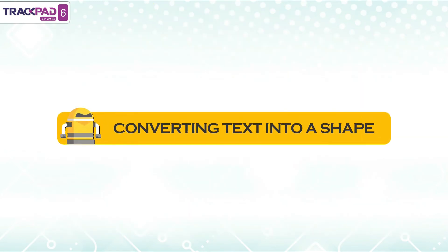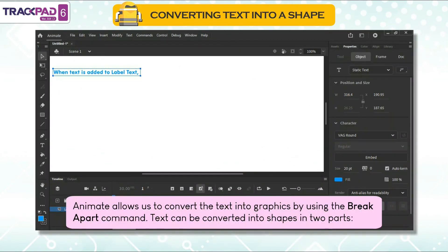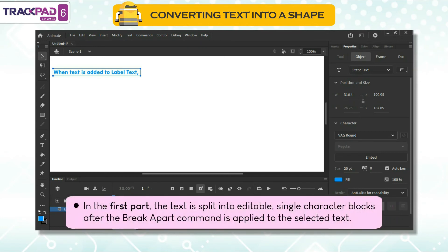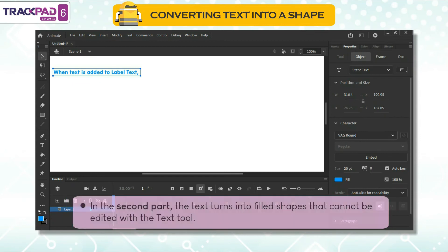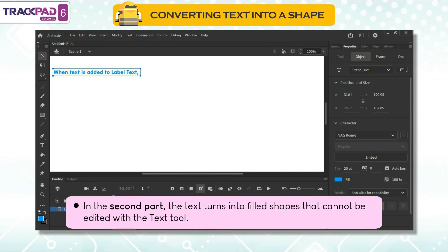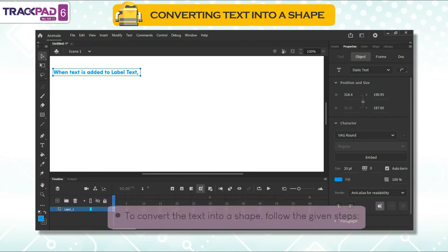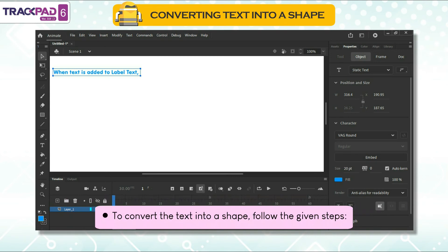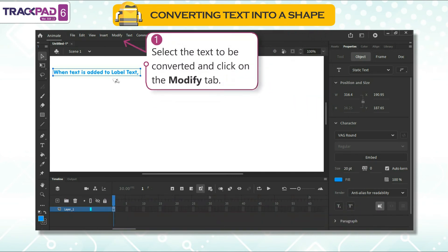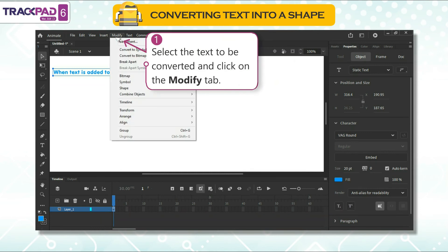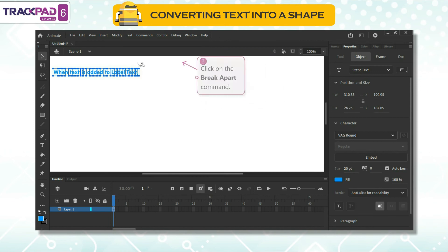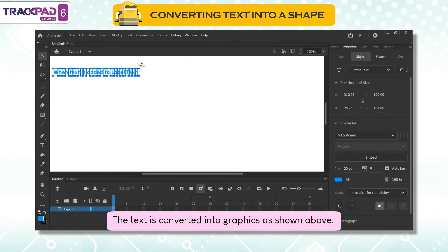Converting text into a shape: Animate allows us to convert text into graphics by using the break apart command. Text can be converted into shapes in two parts. In the first part, the text is split into editable single character blocks after the break apart command is applied to the selected text. In the second part, the text turns into filled shapes that cannot be edited with the text tool. To convert the text into a shape, follow the given steps. First, select the text to be converted and click on the modify tab. Second, click on the break apart command — the text is converted into graphics as shown.